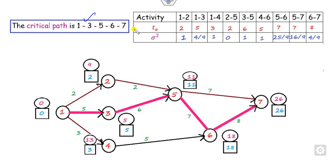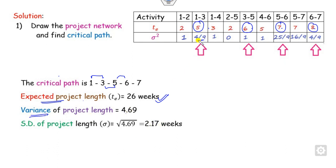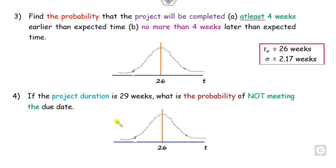Once you find the critical path, find the expected project length by summing the Te values along path 1–3–5–6–7, which gives 26. Similarly, compute the variances along the critical path: 4/9 + 1 + additional terms, and the standard deviation sigma is the square root of the total variance, giving sigma = 2.17. Now we need to answer two probability questions: what is the probability of completing at least 4 weeks early, and no more than 4 weeks late?